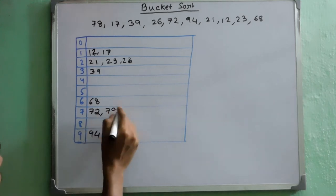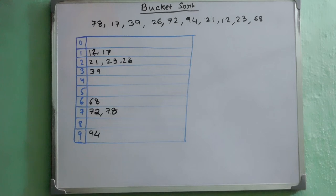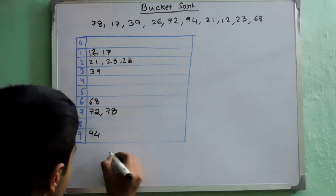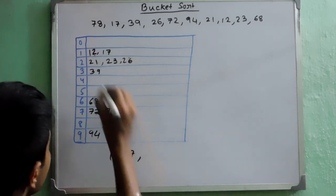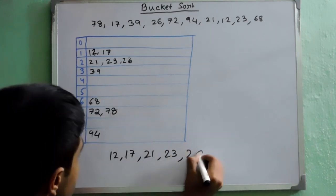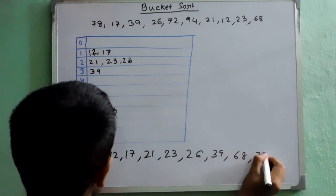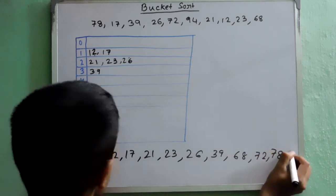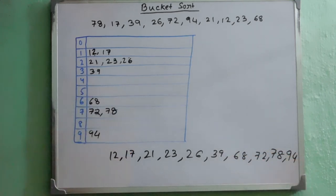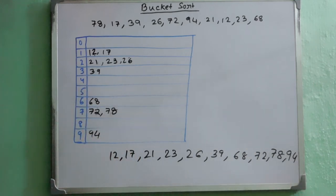Now what we will do? We will just traverse these buckets from top to bottom and write accordingly. So first comes 12, then 17, then 21, then 23, then 26, then 39, then 68, then 72, 78 and finally 94. As you can see, this is the sorted array that was required.